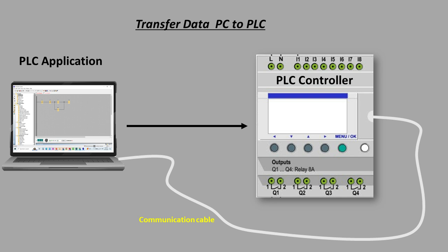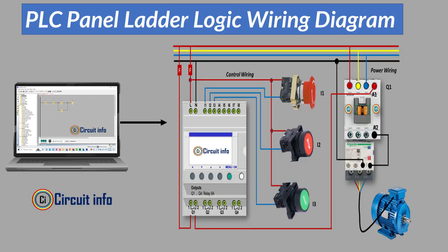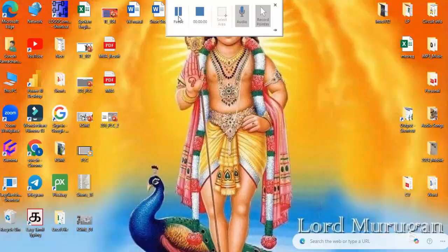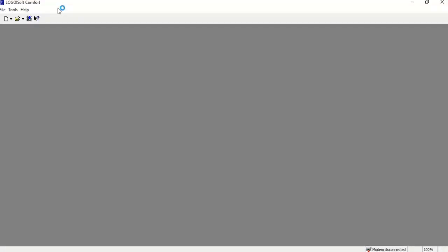Ensure this is done according to the supplier manual instructions. Then perform the physical wiring according to the I/O addresses specified in the ladder logic diagram. This ensures that inputs and outputs are connected correctly, enabling the PC to control the direct online starter as programmed.